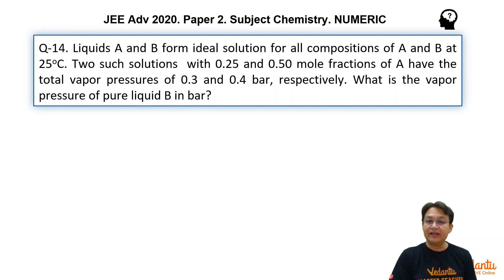In this problem, liquids A and B form ideal solutions for all compositions and have formed two solutions. In solution number one, the mole fraction of A is 0.25, and in solution number two, the mole fraction of A is 0.5. The total vapor pressures in these two cases has been given.